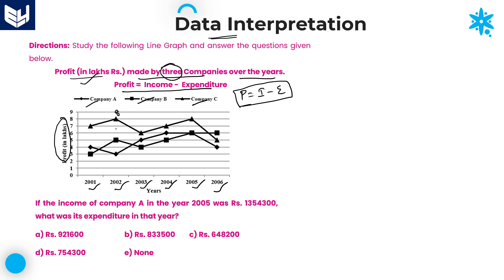If you observe carefully, taking the values is somewhat difficult while solving these kinds of problems when the information is given like this. Because the values are not given directly — we need to take each and every value separately. For example, this is 7, this is 8, this is 6. You need to be very cautious about the company as well. The triangle shape belongs to company C, the square belongs to company B, and the rhombus belongs to company A. Taking the numbers with respect to companies and years is very important.